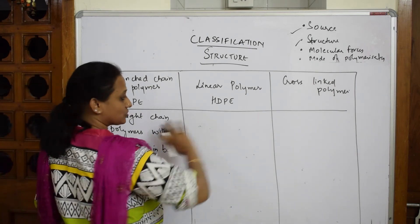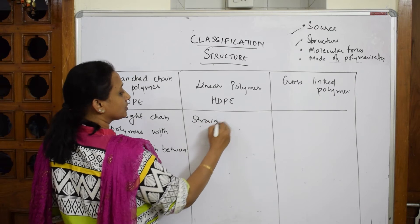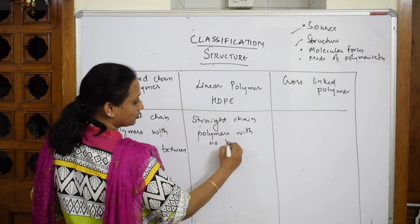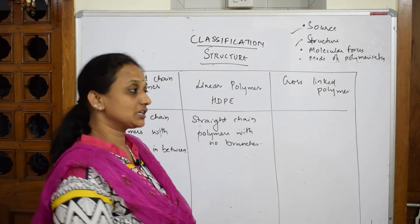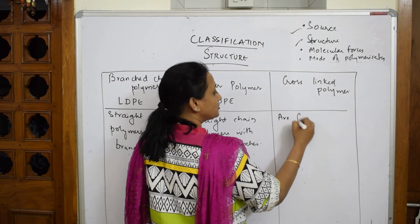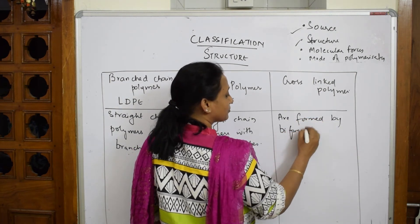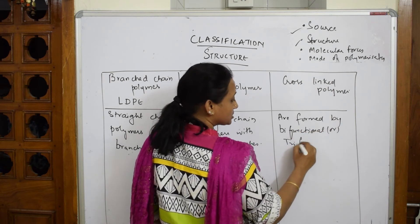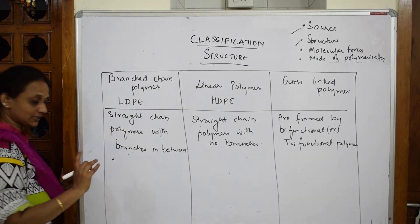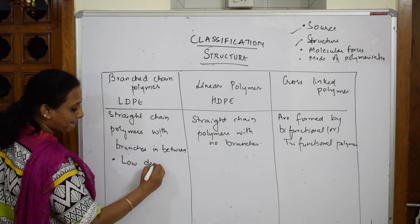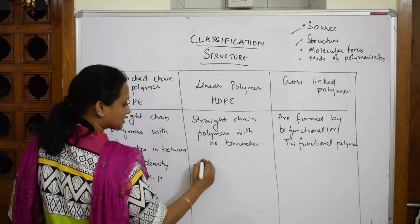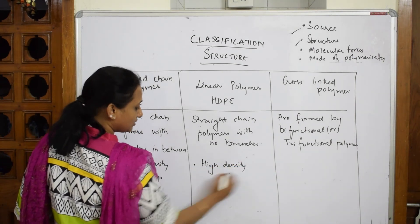Linear polymers are straight chain polymers with no branches — all chains are linearly arranged. LDP stands for low density with a low melting point, while HDP stands for high density with a high melting point.